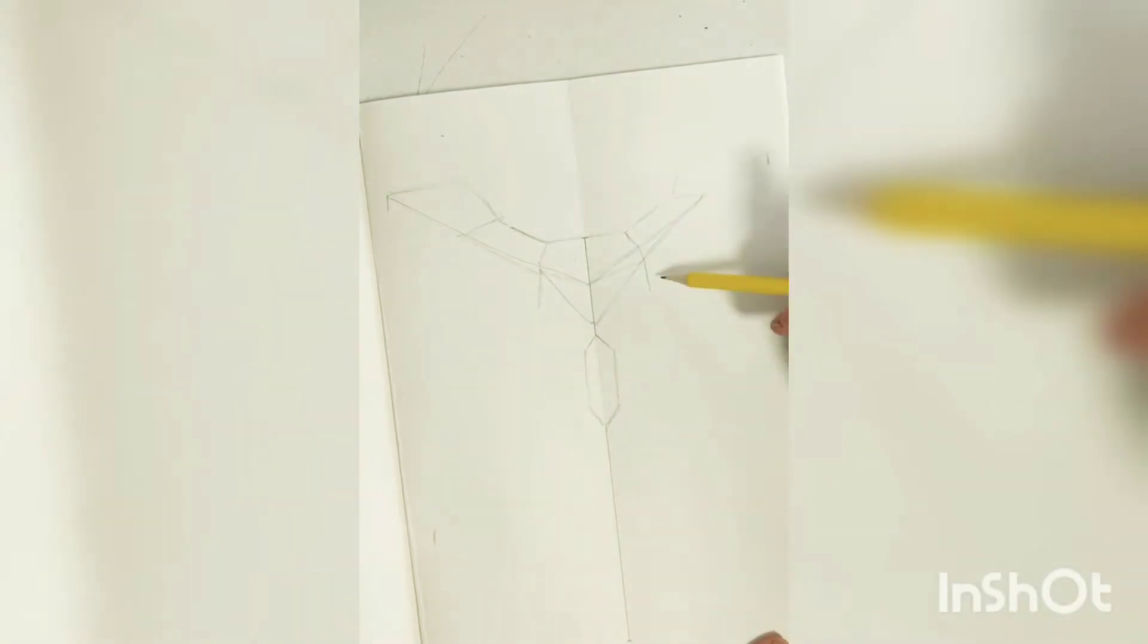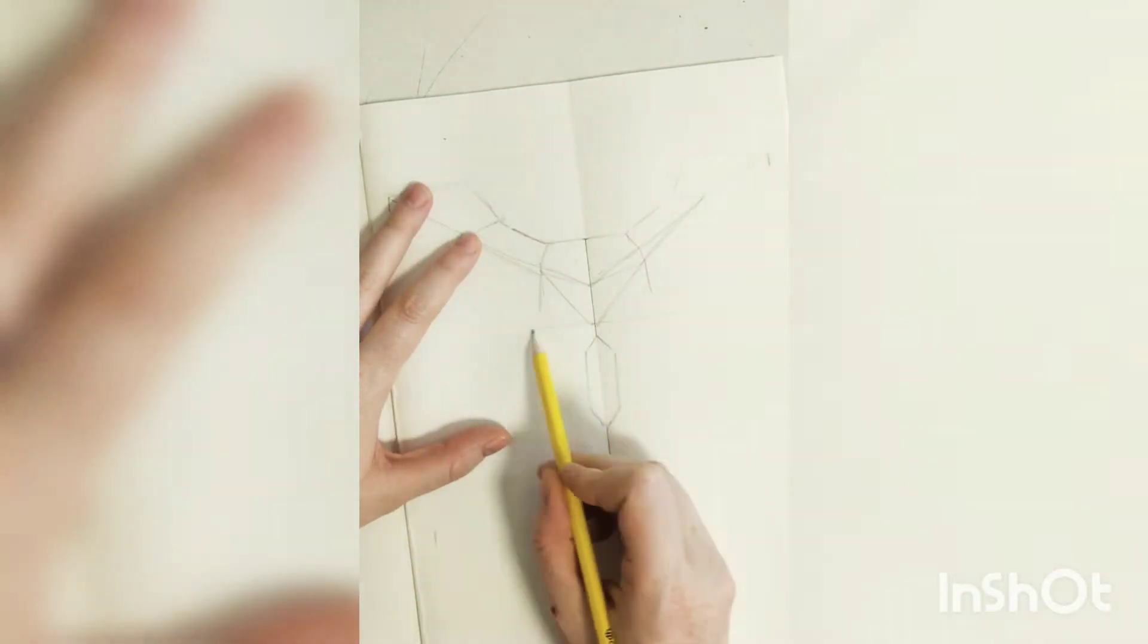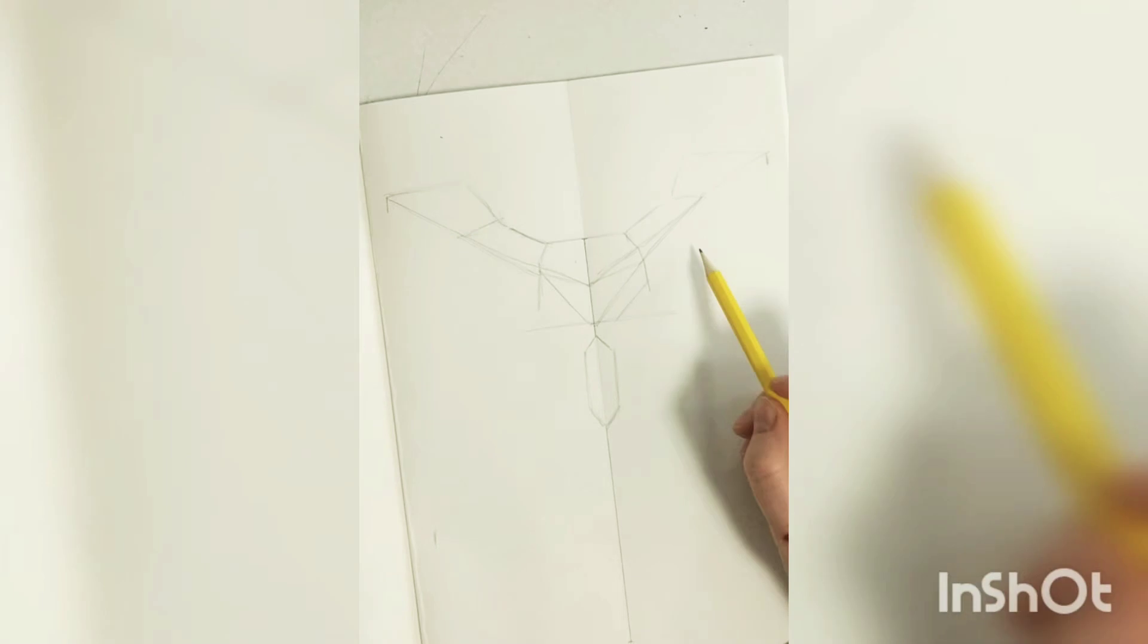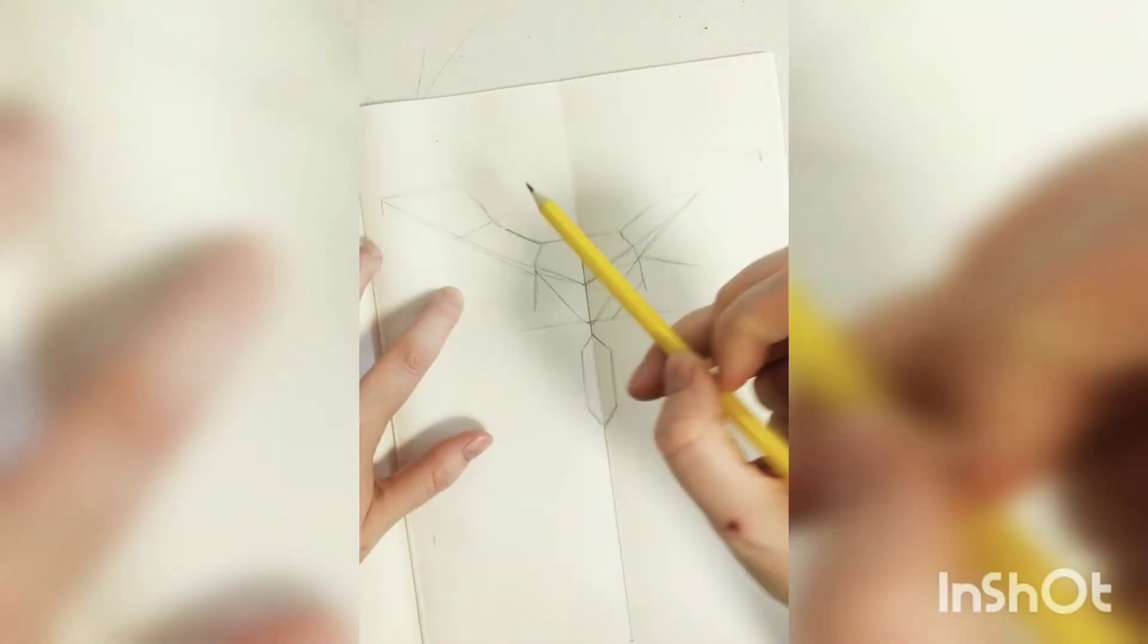And I'm sort of mirroring each mark because I know it's symmetrical. So I'm trying to do a couple of marks and then mirror them on each side.